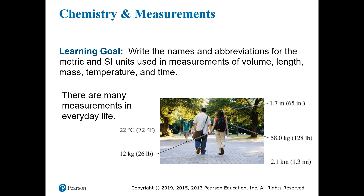Science is all about measurement, and for a quantitative science like chemistry, measurements don't mean much without units. Units are agreed-upon quantities that scientists can use to standardize and compare different measurements across vast distances and long time periods.